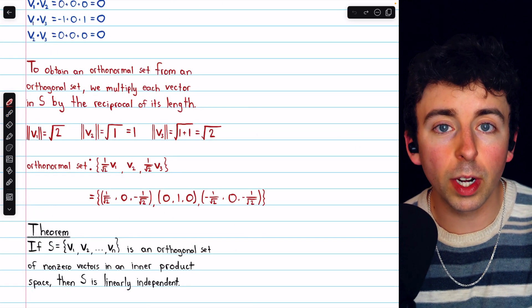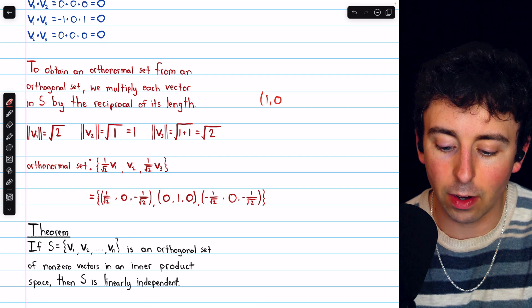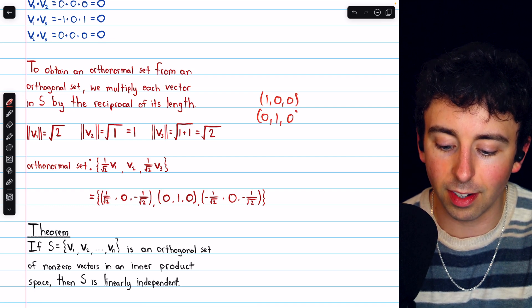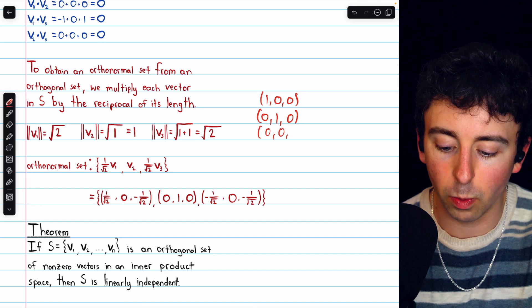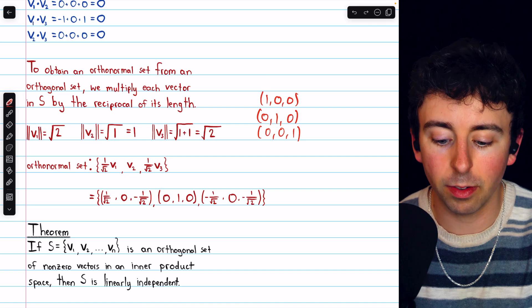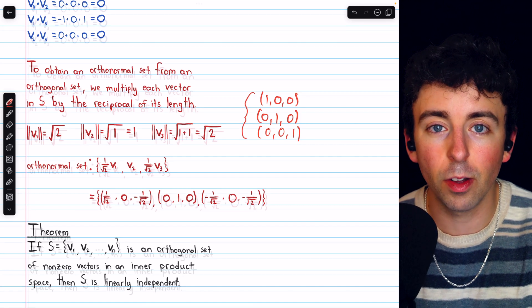You probably already know another orthonormal basis for R cubed. Those are just the standard unit vectors 1, 0, 0; 0, 1, 0; and 0, 0, 1. These vectors also are all orthogonal to each other, and they're all unit vectors. So together they form an orthonormal basis for R cubed.